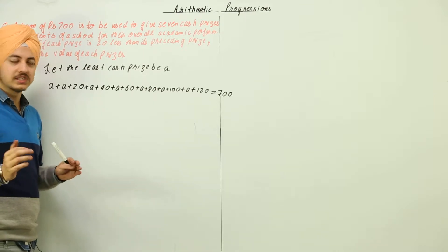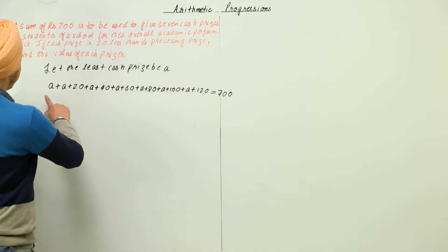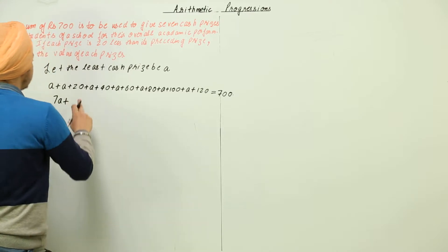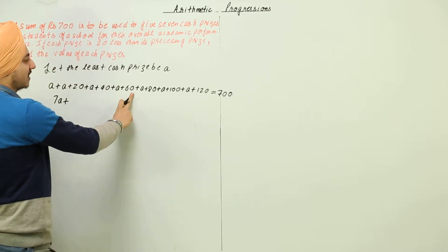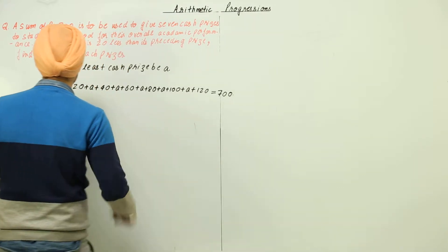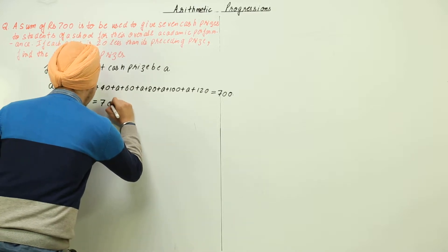Now one thing you can do is this: the solution to this question can be find out the value of a from here, very easy. We know there are 7 a's, so 7a plus 20 plus 40 plus 60 plus 80 plus 100 plus 120, this is equal to 420, is equal to 700.